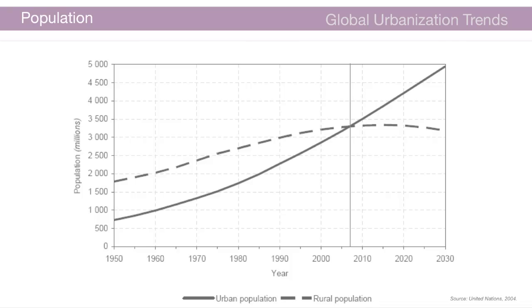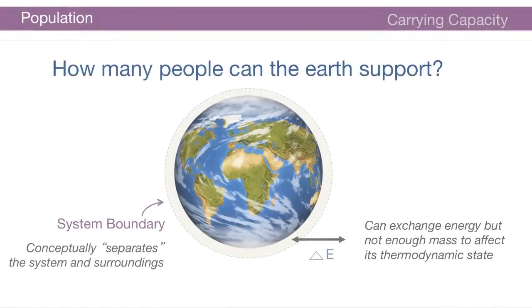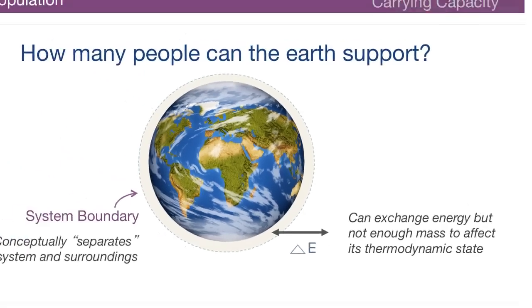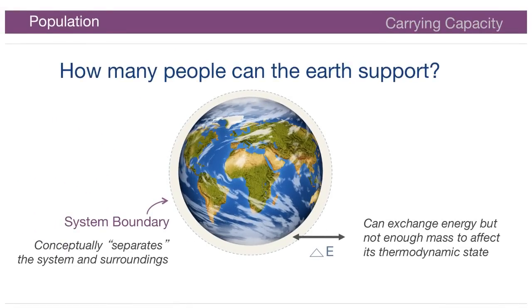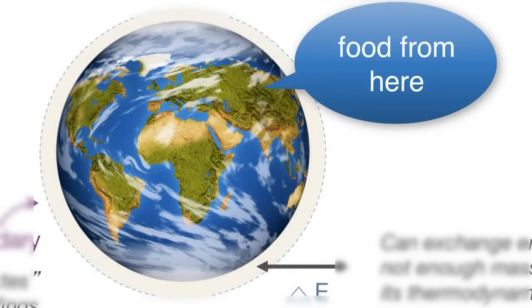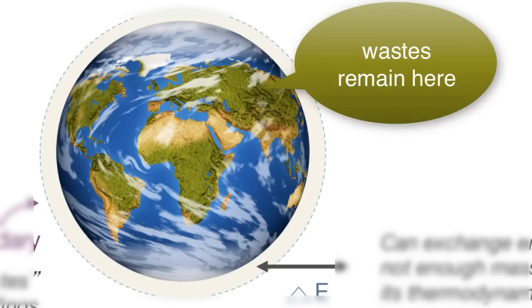Recall that the earth is a closed thermodynamic system, which means we can exchange energy with the surroundings but we cannot exchange matter. The consequence is that all that is needed for life must be produced on earth from things already on the earth, and all that is produced in the form of waste must either be absorbed on earth or accumulated on earth.